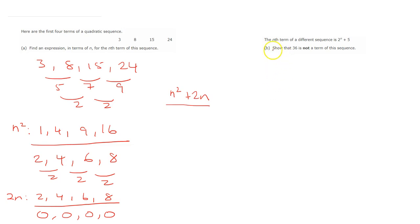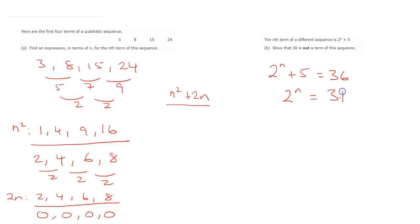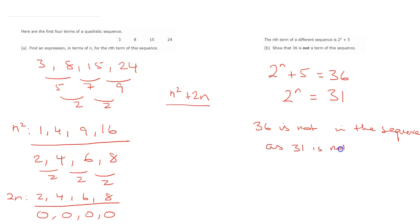For part b, the nth term of a different sequence is 2 to the power of n plus 5. Show that 36 is not a term of this sequence. If 36 were in the sequence, then 2 to the power of n plus 5 would equal 36, so 2 to the n would equal 31. However, there is no power of 2 equal to 31 — all powers of 2 are even. The closest is 32. So 36 is not in the sequence, as 31 is not a power of 2.